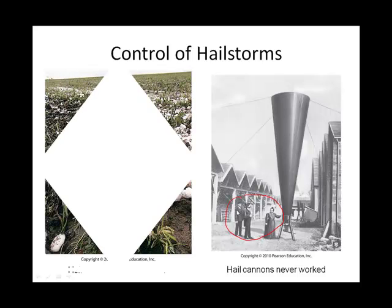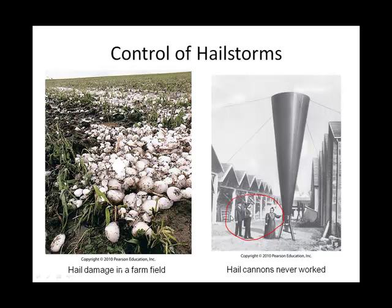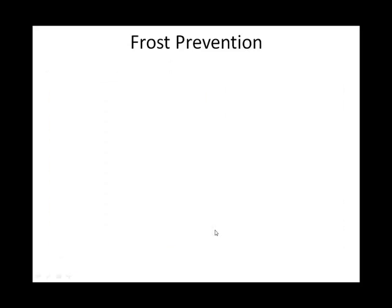This shows us why we would ever try to manipulate the atmosphere to prevent it from sending hail our way. Hail can be a very damaging phenomenon. If you get plants at the wrong stage, they aren't going to make it.